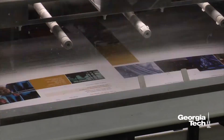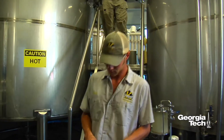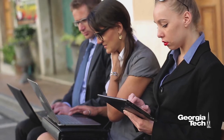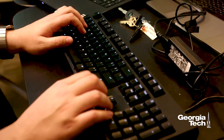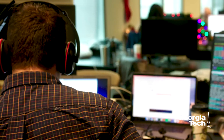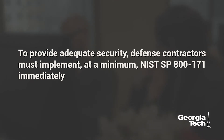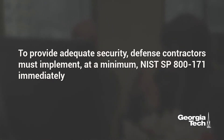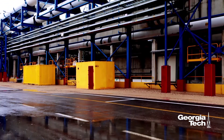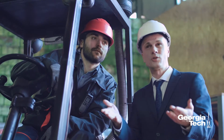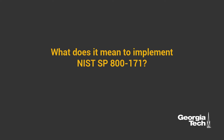It is of paramount importance that defense contractors comply with the provisions of the DFARS clause if covered defense information resides on or is transmitted through their internal information systems or network. Defense contractors are required by the DFARS clause to provide adequate security on all covered contractor information systems that process, store, or transmit covered defense information. To provide adequate security, defense contractors must implement, at a minimum, NIST SP 800-171 immediately. It is the contractor's responsibility to determine whether it has implemented the NIST standard, as well as any other security measures necessary to provide adequate security.